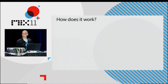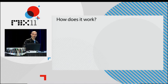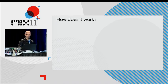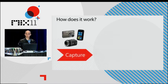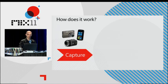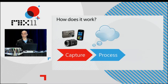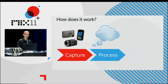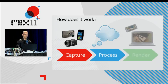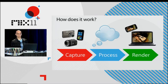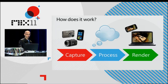By now you might be wondering: how does this work? How are we doing this with just photos? There are three stages to our process. The first is obviously capturing, and as I said, that's happening with an ordinary camera of any type. The second stage is processing, and that goes on in the cloud on a server. The final stage is rendering, and that can be on the desktop, as I've shown, or on the phone.